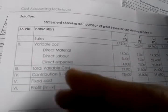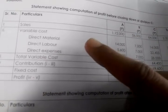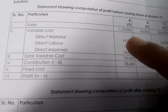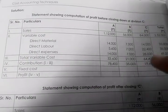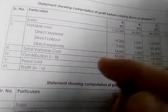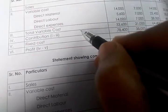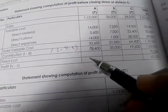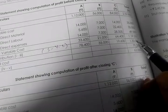The table has divisions A, B, C, D, and a total column. Enter the sales figures as given, then the direct variable cost — direct labor, direct material, and direct expenses. Calculate the total variable cost. Contribution equals sales minus variable cost. Then the fixed cost is seventy thousand for the three divisions combined.